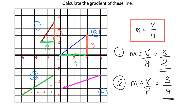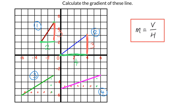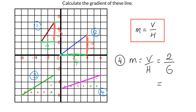For line four, the horizontal distance is six and the vertical distance is two. This is a good one to look at because we've got numbers that are divisible by each other. M equals V over H: vertical distance is two, horizontal distance is six. At any point in maths we would simplify a fraction, so instead of two over six, we divide both top and bottom by two, giving us one over three. So the gradient for line four is one third. Gradients can be fractions or whole numbers — if the top number creates a top-heavy fraction, it may reduce to a single whole number.